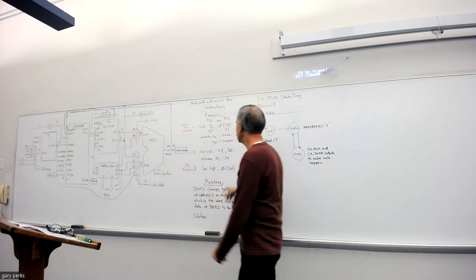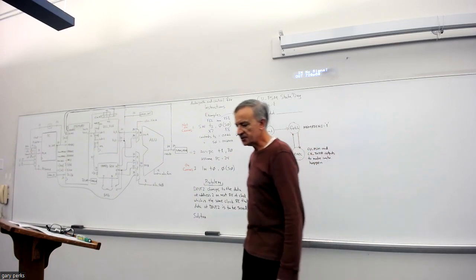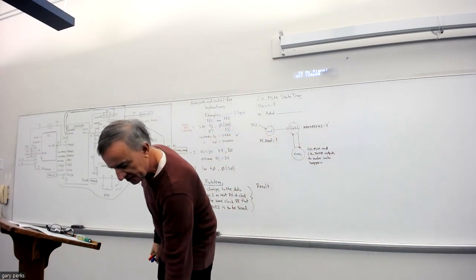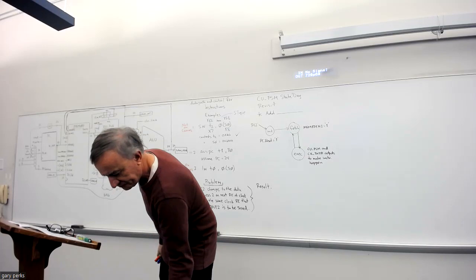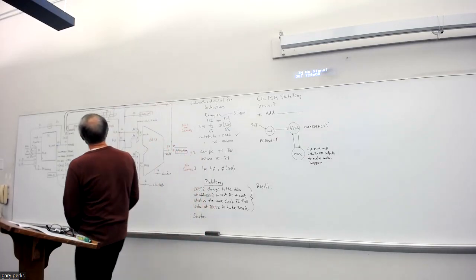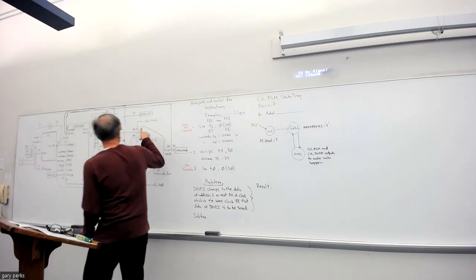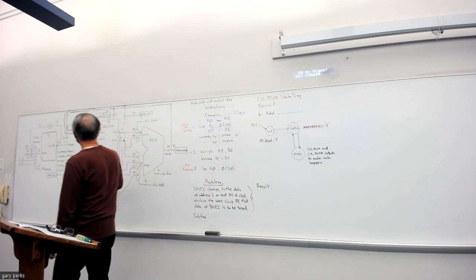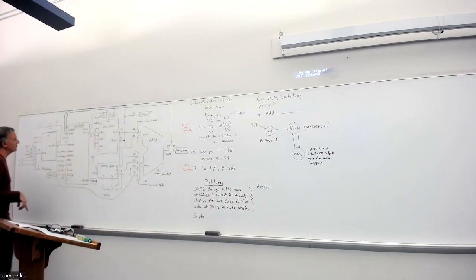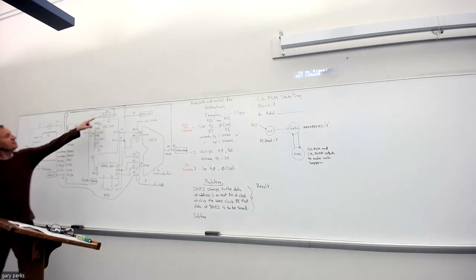Next instruction is AUIPC. A student noted there's something on the mux above the reg file write data input — that input is connected to interrupt-related hardware. Since we're not covering interrupts in this course, those inputs should just be connected to zero. The same applies to the corresponding inputs on the program counter mux.